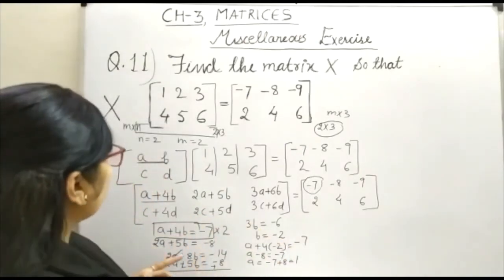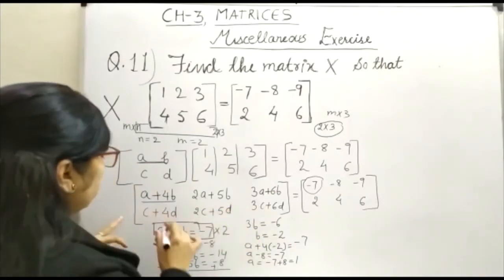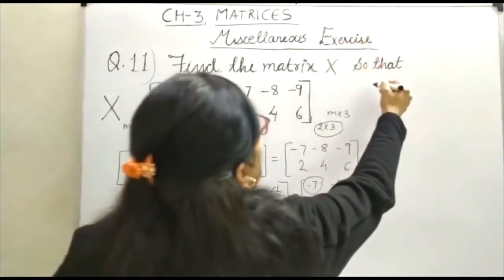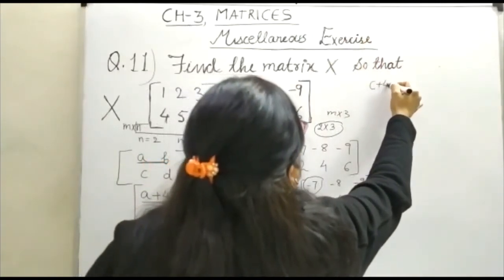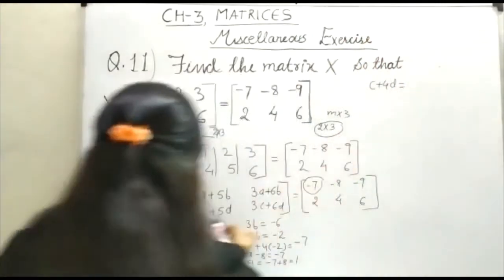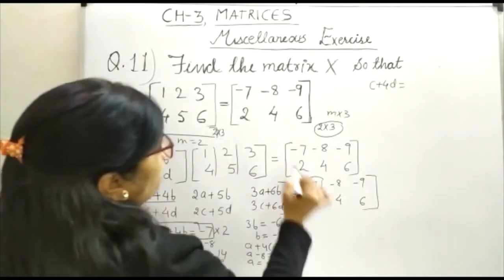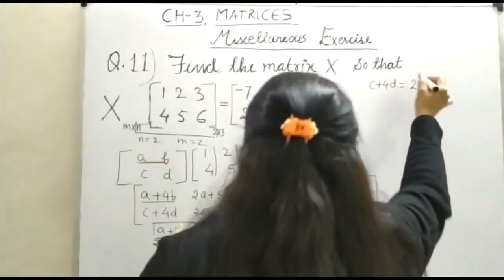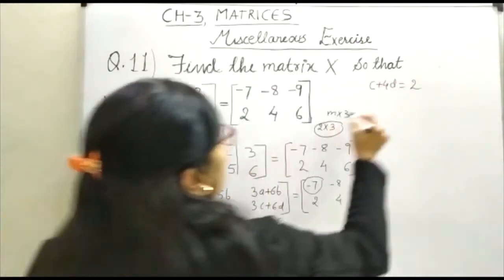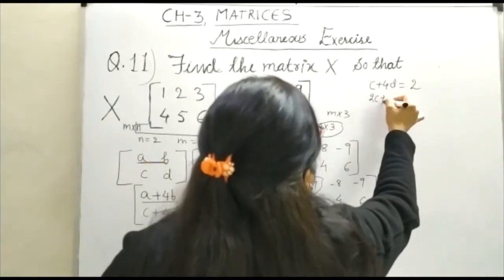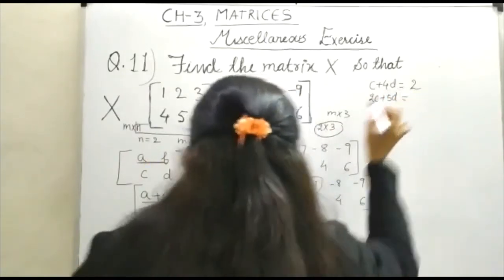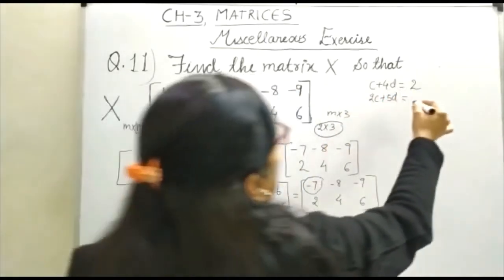Similarly, you can work out for any two equations. I am taking here C plus 4D. Here, C plus 4D is equal to the value of this. This corresponding element of this is 2. Then, another one 2C plus 5D. 2C plus 5D is equal to the value of this will be equal to 4.